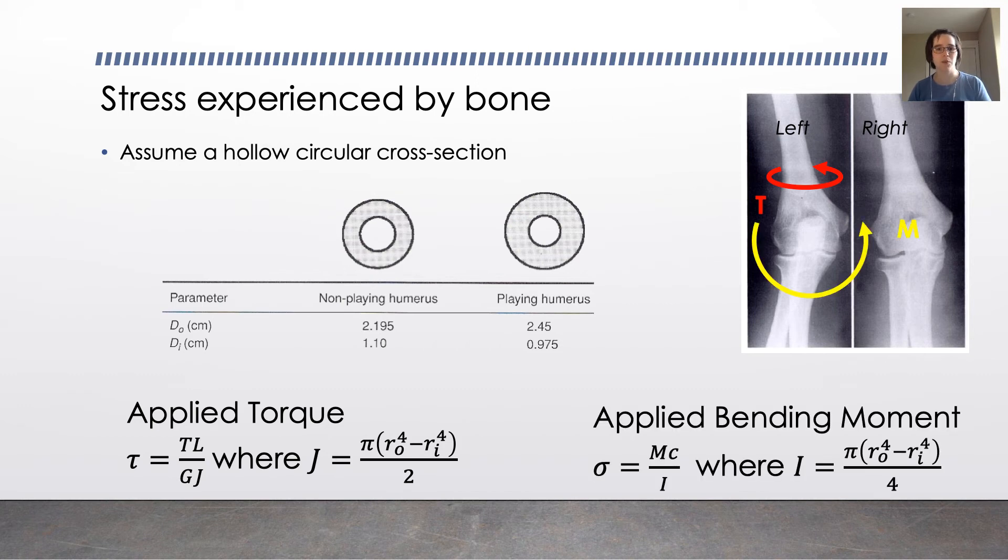Similarly, if you apply a bending moment about the end of the arm, as you might get a bending moment component from hitting a tennis ball. Remember for mechanics and materials, normal stress is mc over i. And i is the polar moment of inertia, which, again, depends on the radius to the fourth. It's very similar to the polar moment of inertia.